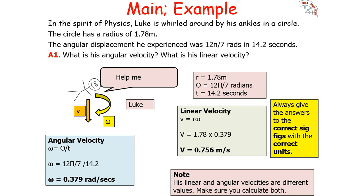Here is an example: a student called Luke is being whirled around by his ankles in a circle of radius 1.78 m. He experiences an angular displacement of 12π/7 radians in 14.2 seconds. His angular velocity ω = θ/t = 0.379 rad/s. Note we do not leave answers in terms of π as that would imply infinite significant figures. His linear velocity v = rω = 1.78 × 0.379 = 0.675 m/s. Both values are given to the correct significant figures with correct units, and note that linear and angular velocity are different values that must be calculated separately.